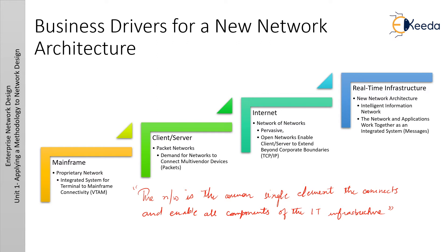Modern networks connect multiple resources and information assets within the organization, as well as provide access to external resources. The IT model has evolved from mainframe to client-server to internet to real-time infrastructure. The Cisco vision of the next phase of IT evolution is a real-time infrastructure that integrates the network and the application as one system. Intelligence is starting to play a key role in improving business performance and processes, enhancing the network's role as a foundation for enabling communication, collaboration, and business success.